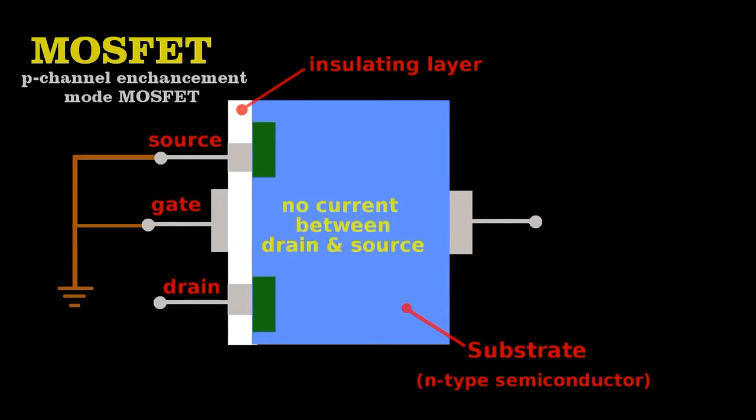When we create a voltage difference between the gate and the source, it generates a field through the insulating layer that draws the free positive charge carriers towards the gate, opening a channel that now allows current to flow.